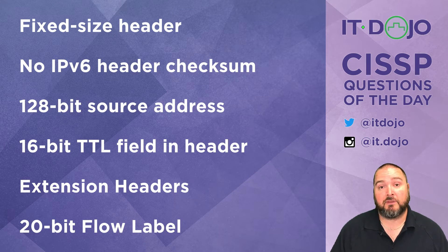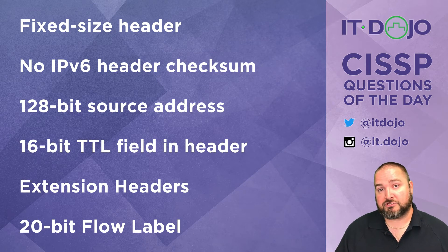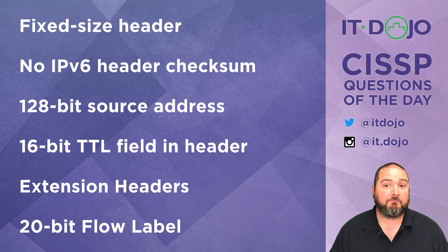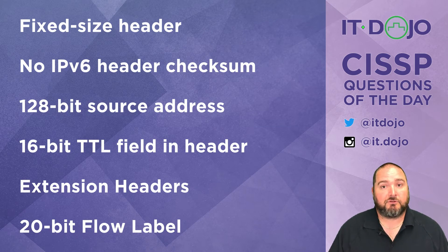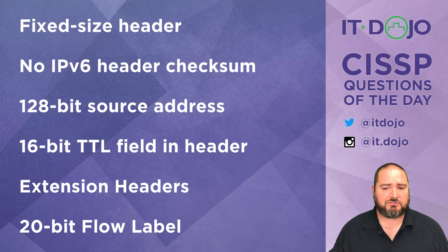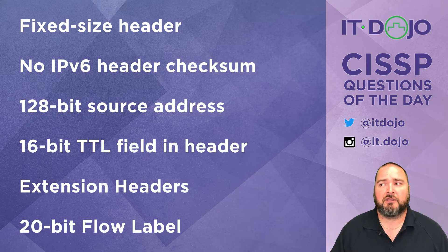The next option says that IPv6 does not have a header checksum — that's true. IPv4 has a header checksum, but the developers of IPv6 reasoned that networks are more reliable these days, and checksums already exist at layer two, layer four, and in applications. So IPv6 developers decided they didn't need checksums in the IP header since everyone else has so many.